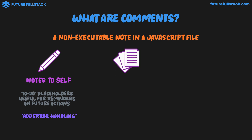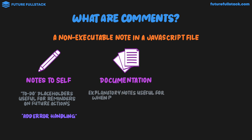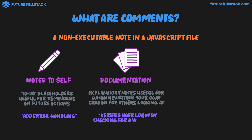The next type of comment is documentation. These are explanatory notes useful for when revisiting your own code or for others looking at it. An example of a documentation comment would look something like: 'This piece of code verifies user login by checking for a valid token.' This comment is explaining what our block of code is doing.